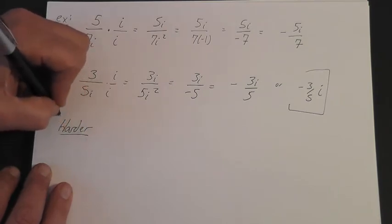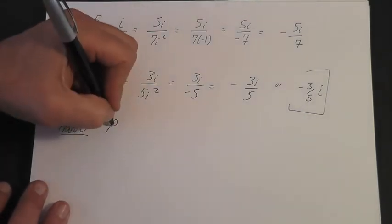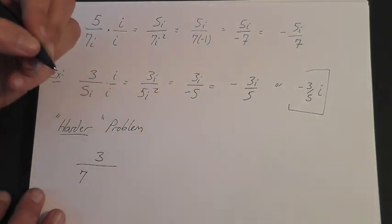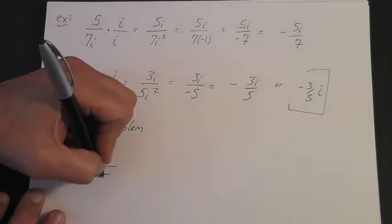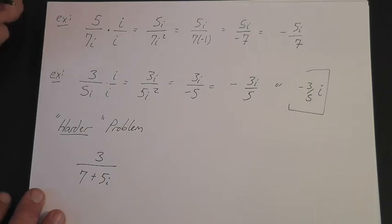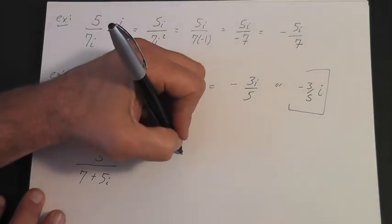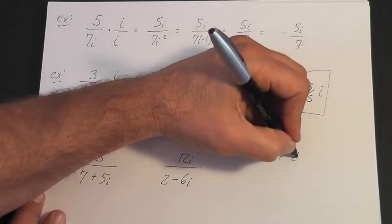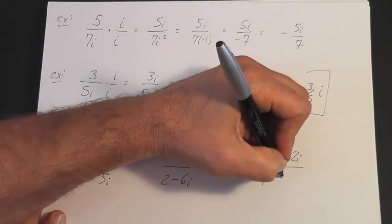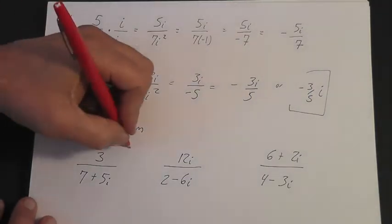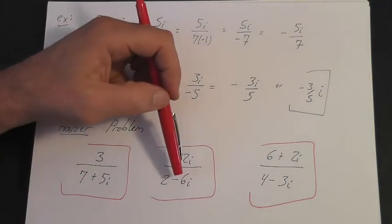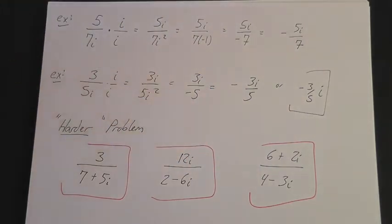The first real difficulty is recognizing when problems get a little bit harder — and they get harder when you have a complex number with both a real and an imaginary part in the denominator. For example, 3 over 7 plus 5i, or 12i over 2 minus 6i, or 6 plus 2i over 4 minus 3i. In each case the denominator has both a real part and an imaginary part. Those can be a little tricky, but not that hard.